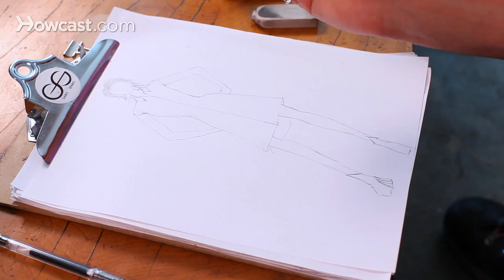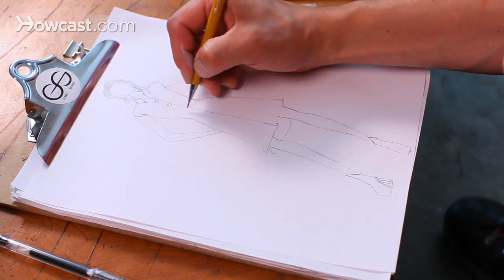And then it's as simple as think about what style of button you want to use. For this particular shirt dress, I'm going to go with just a circular button, simple. And just draw your little circles evenly spaced down the body.